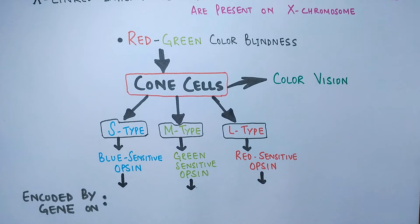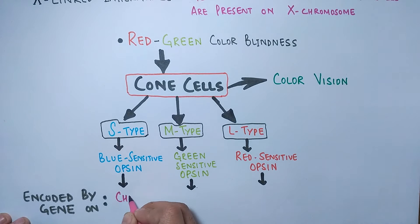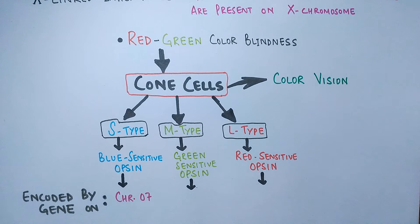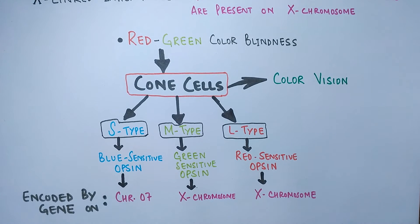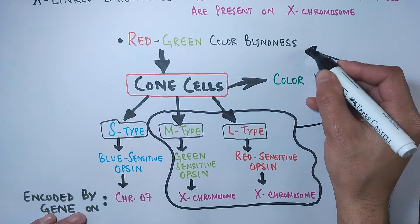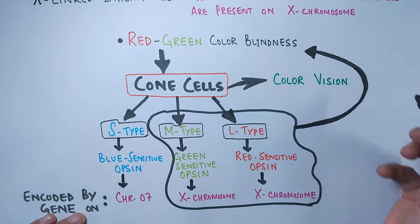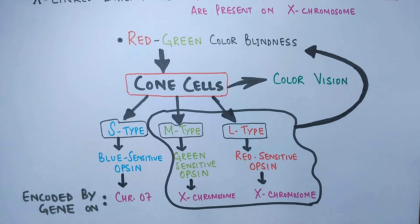The genes for S-type opsin are found on chromosome number seven, while the genes encoding M-type and L-type opsins are found exclusively on the X chromosome. That is why colorblindness is referred to as red and green colorblindness — because both of these color-absorbing opsins are produced by genes present on the X chromosome, making it an X-linked inheritance.